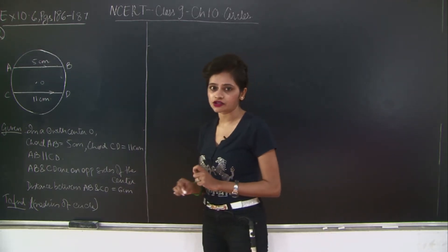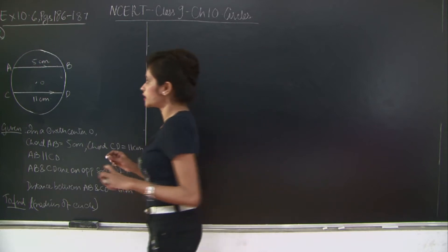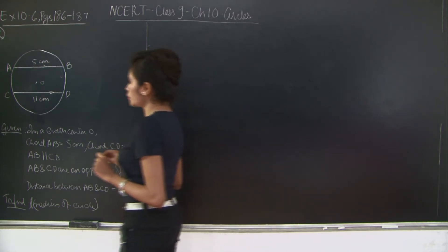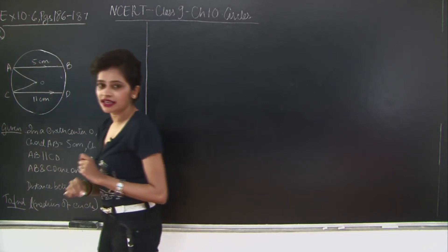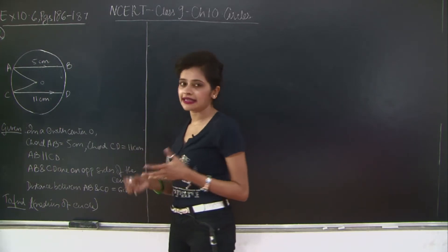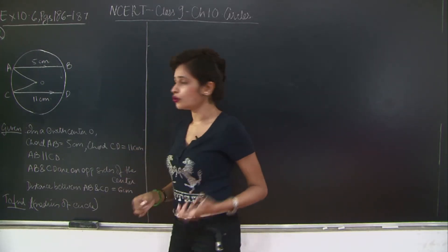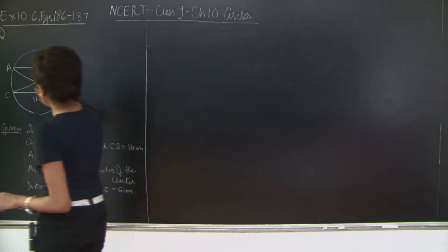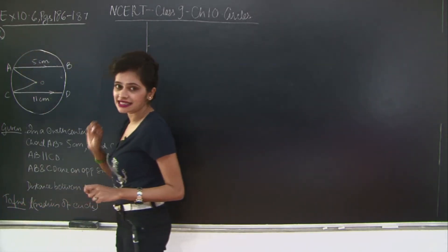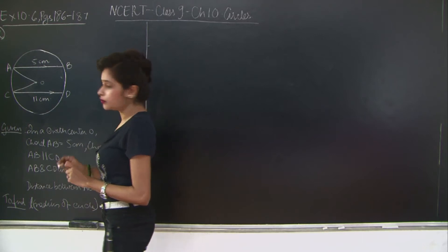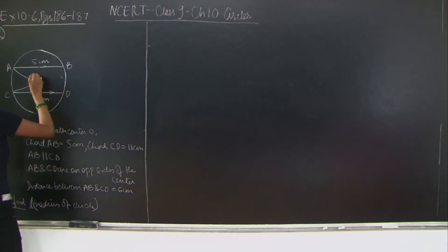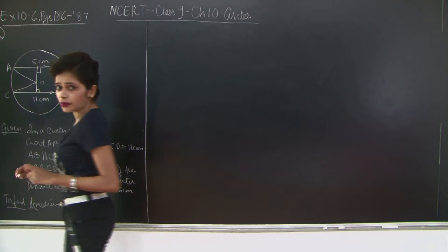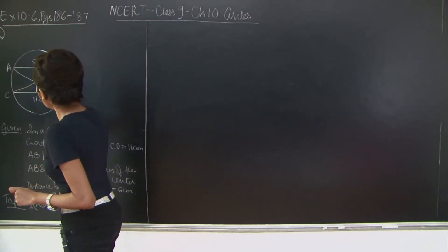How would we find the radius? Very simple — first let's connect OA and OC, which are the radii of the circle. We need to find either OA or OC. Now let's draw perpendiculars from O to AB and from O to CD. This entire perpendicular length is 6cm.